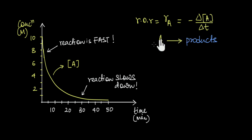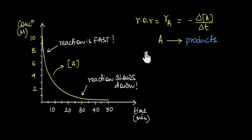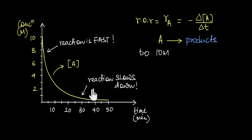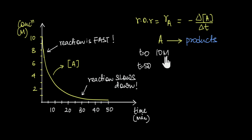Coming back to this reaction: initially at time t = 0, the concentration of A was 10 molar, and it dropped down to almost 0 molar in 50 minutes. So at time t = 50, the concentration of A is almost 0 molar.